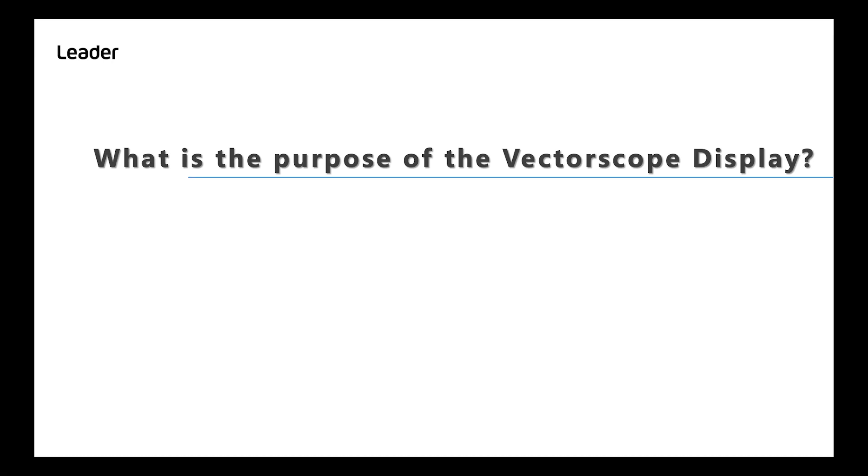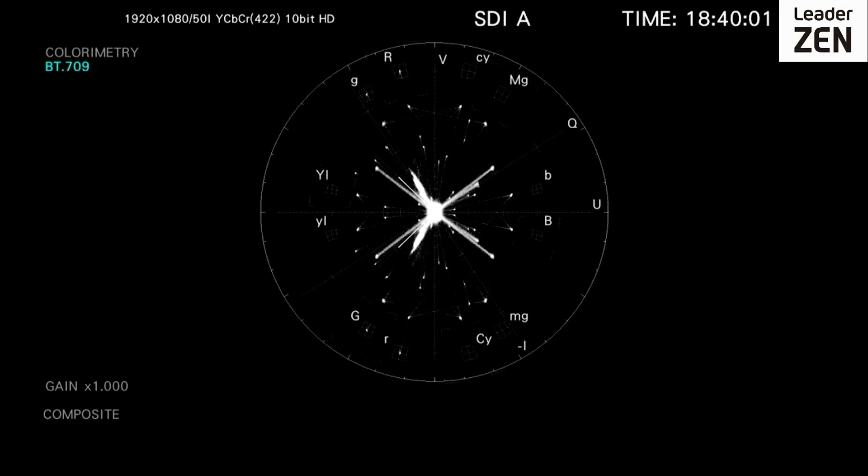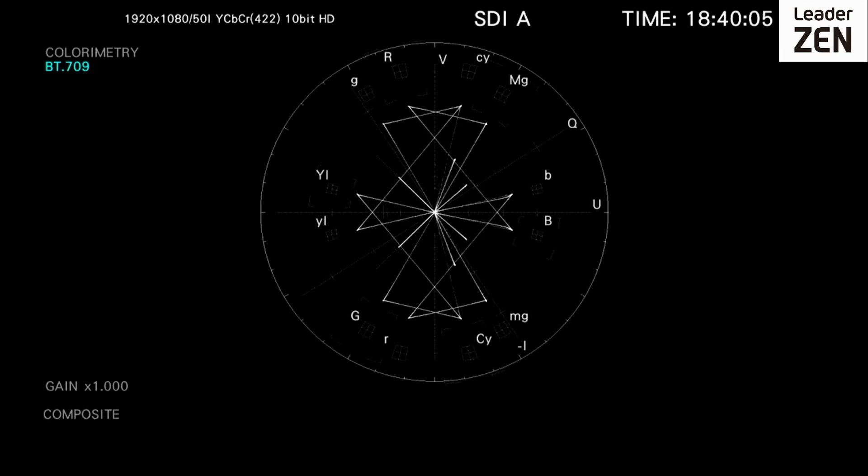So what is the purpose of the vectorscope display? The vectorscope complements the waveform display for the purpose of measuring and testing television signals regardless of format.